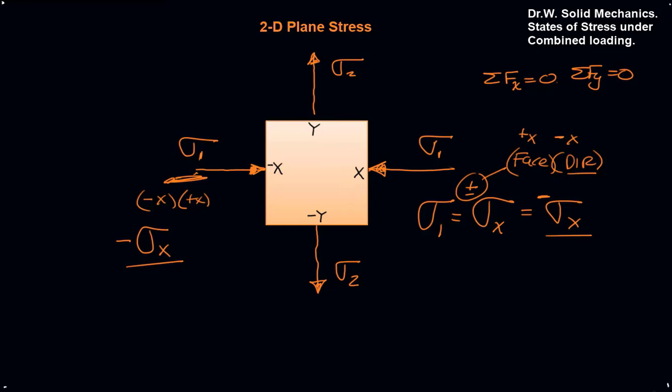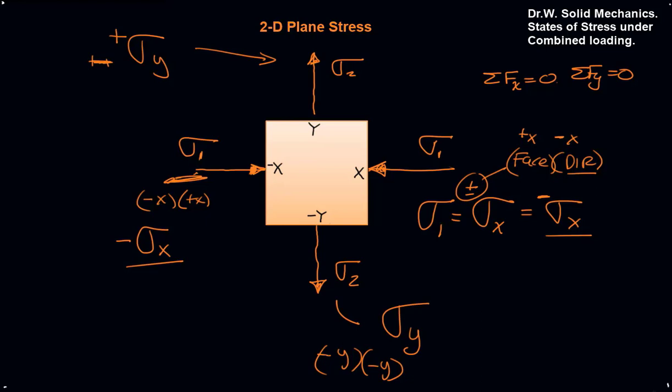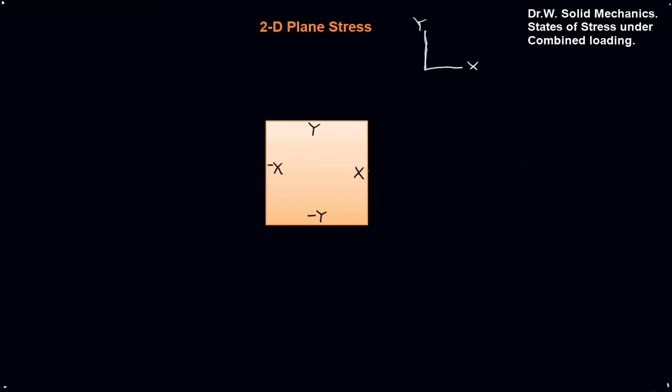On the y-face we have sigma y. It's on the positive face in the positive y-direction, so that's a positive value. On the negative y-face in the negative y-direction, negative times negative is positive. These cancel like multiplications — it's a shorthand way of keeping track of these values.